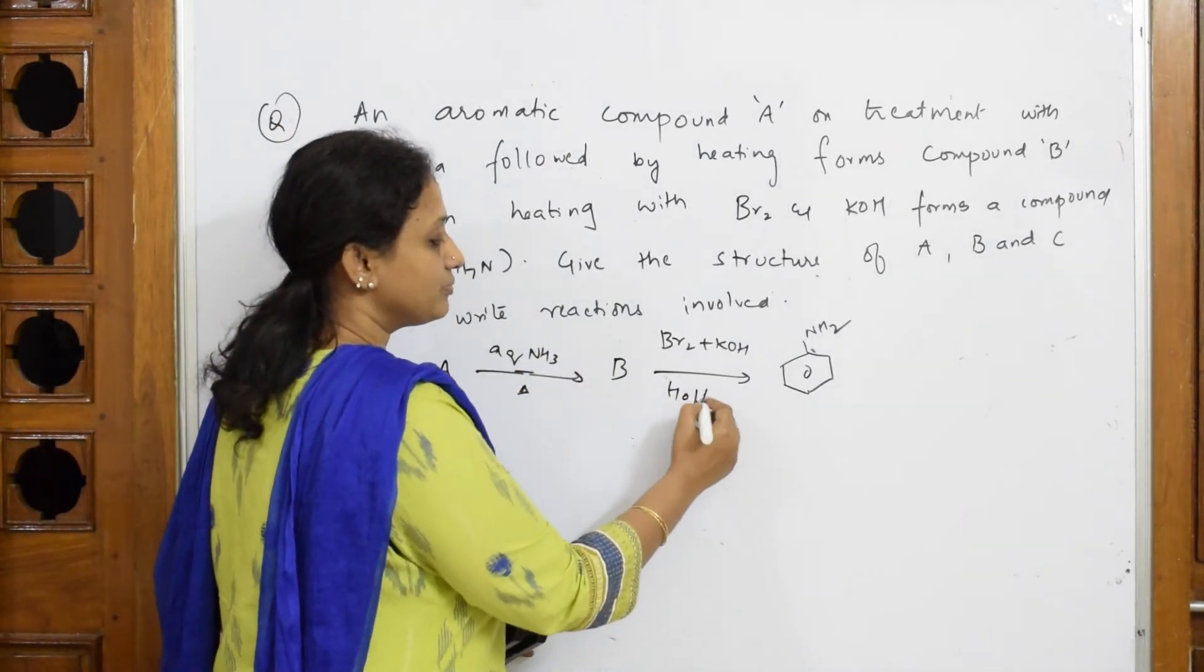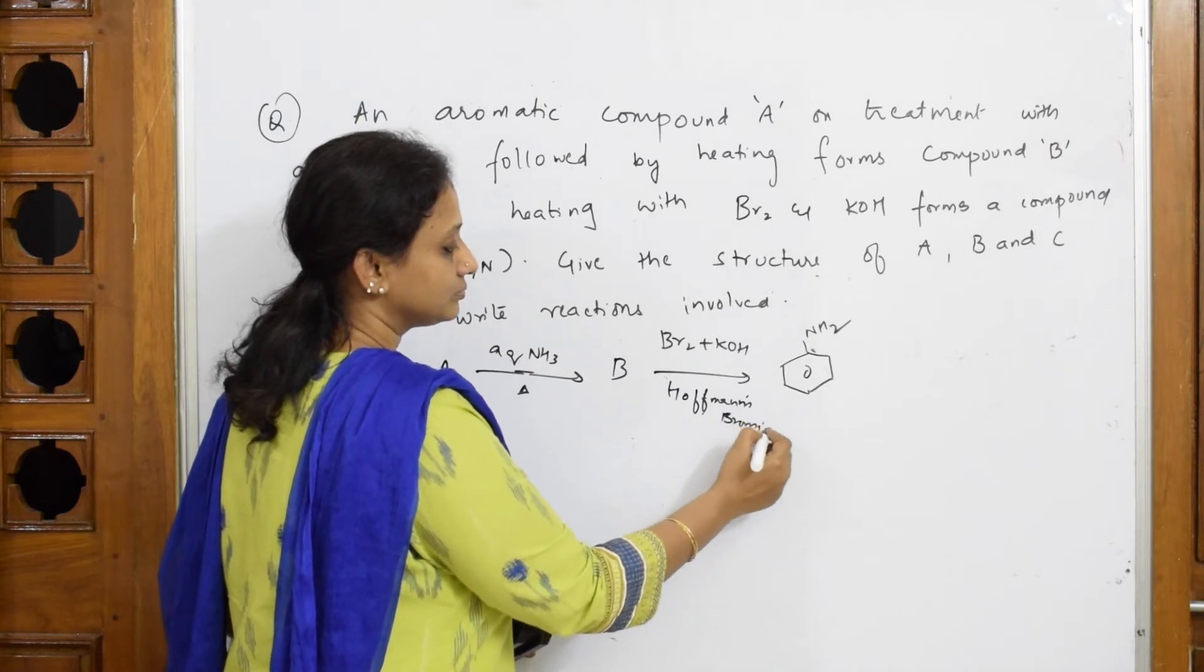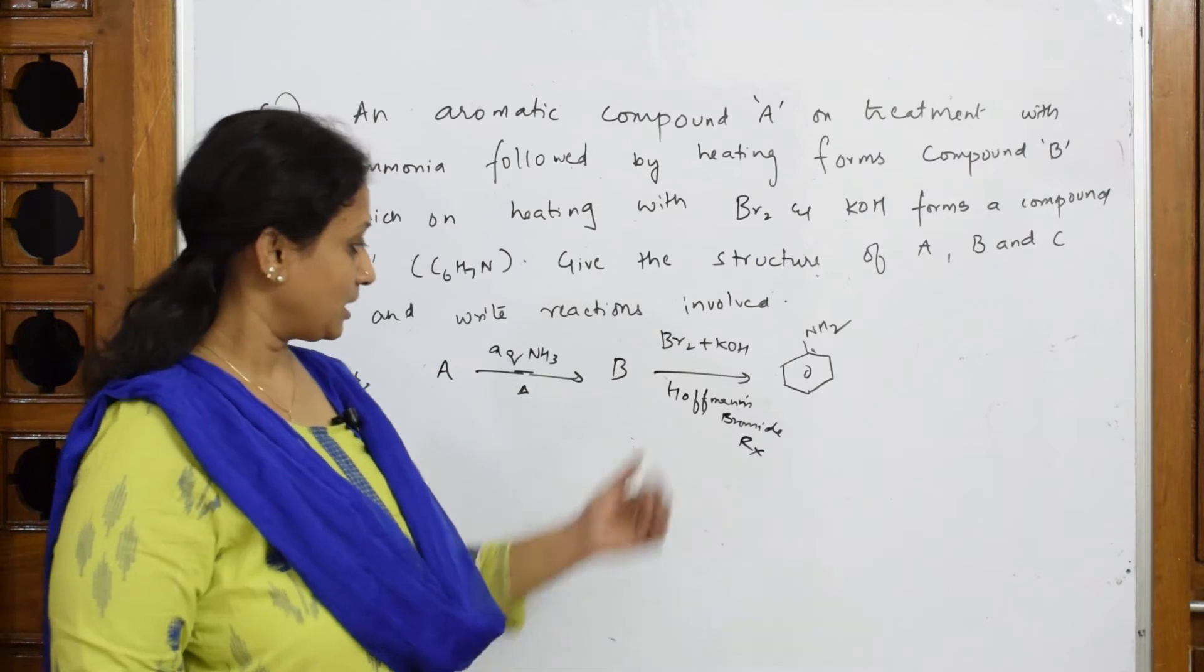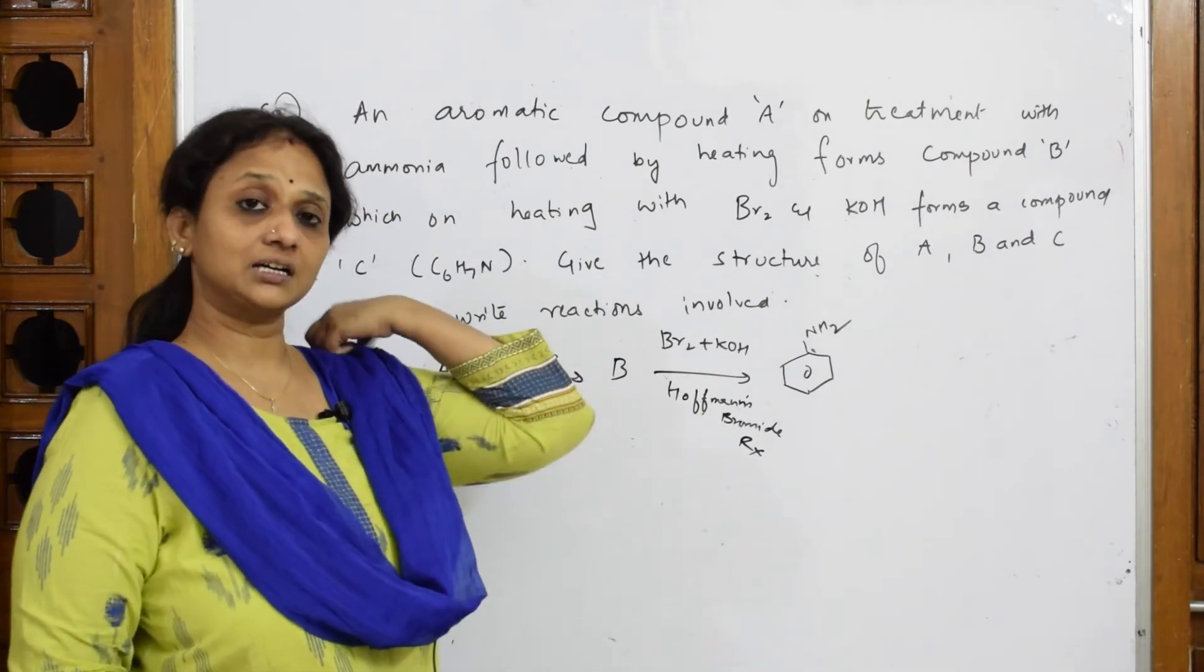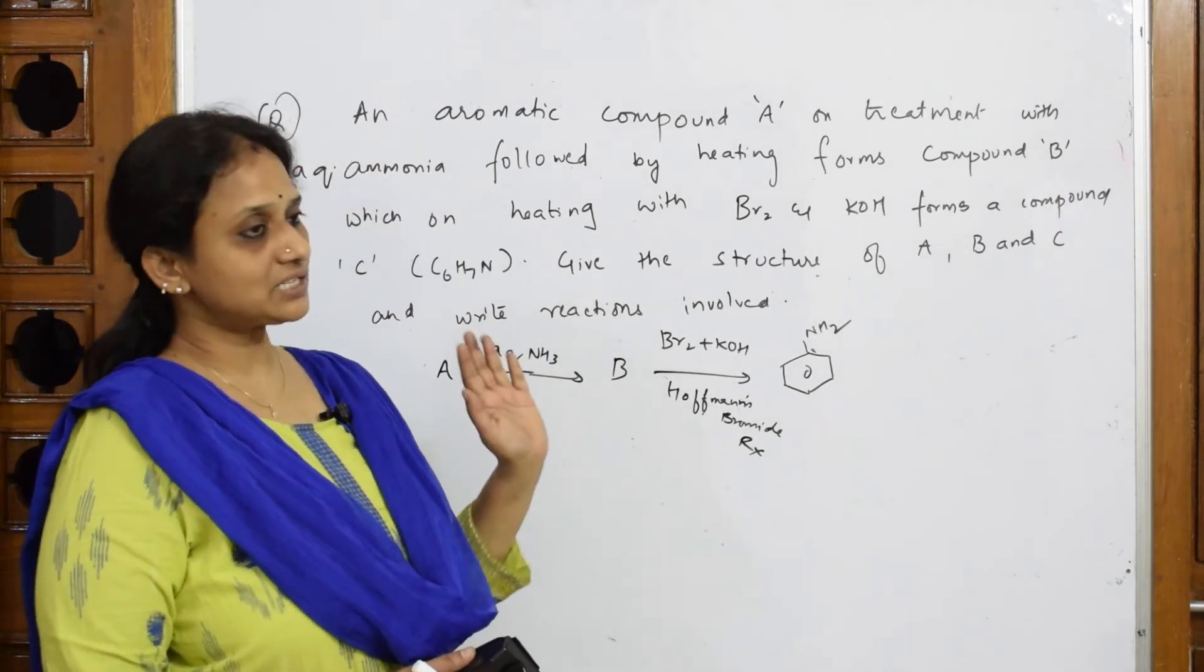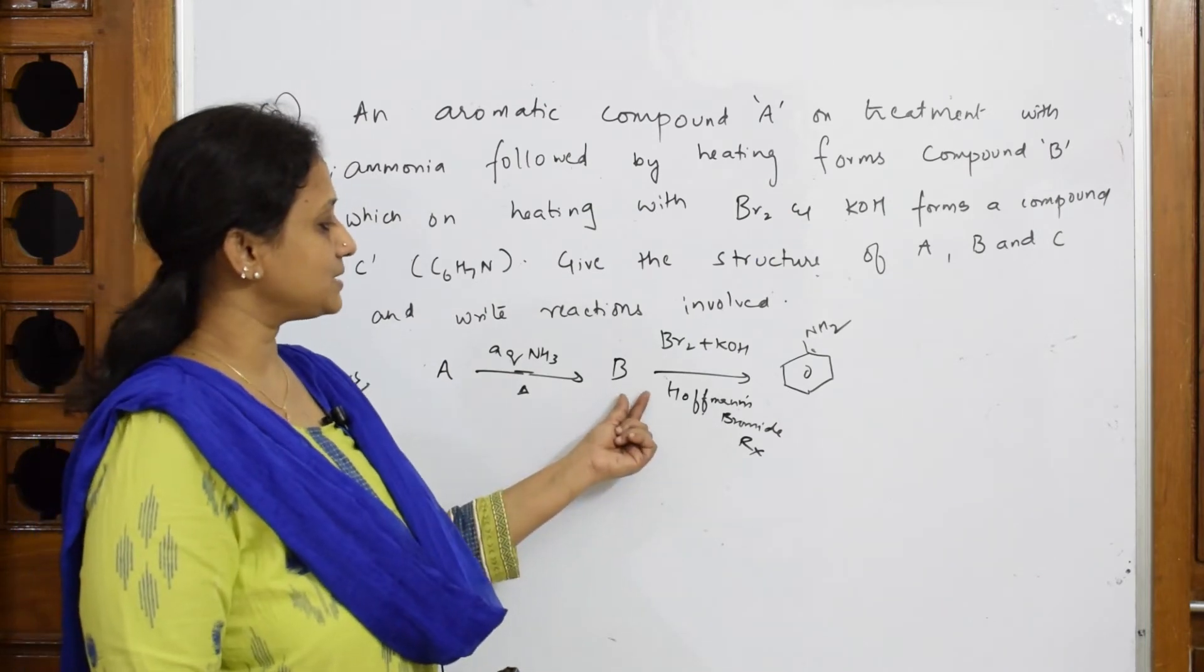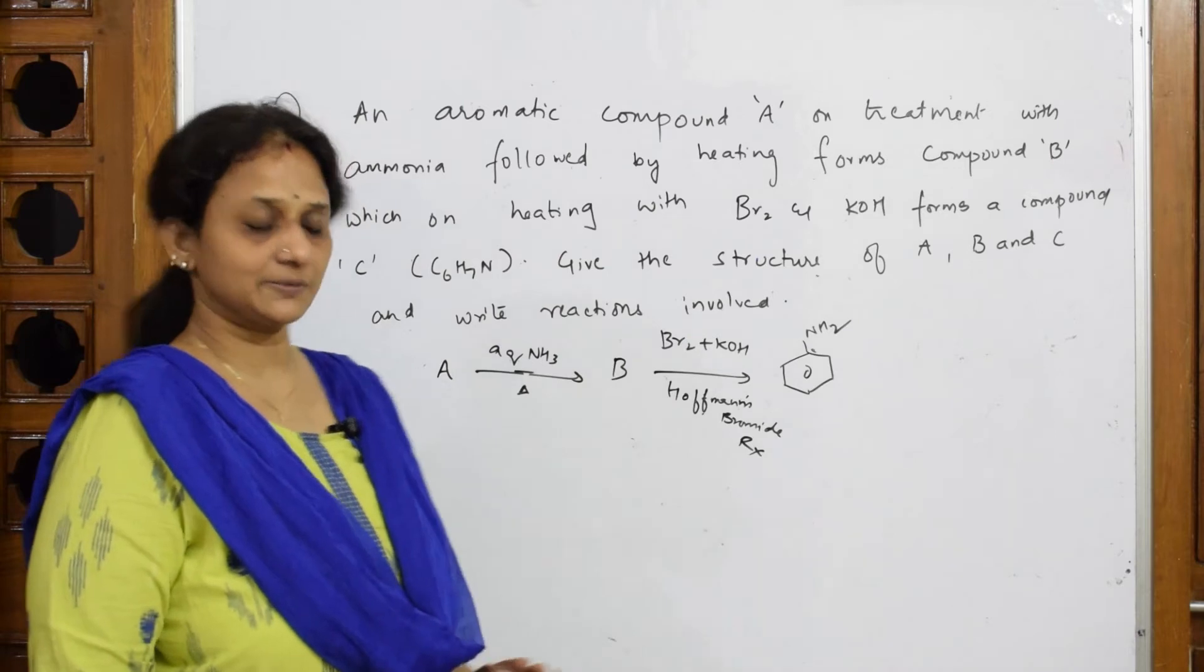Let us write Hoffmann's bromamide reaction. I said it can be used to prepare aliphatic and aromatic amines. In Hoffmann's bromine reaction what did we take? We have taken a compound called amides. We then later converted into amines. So this should be compulsory amide. This will convert amides only to amines.